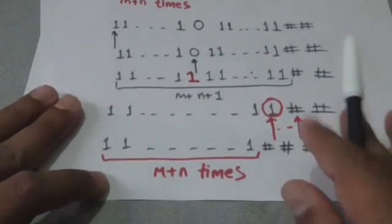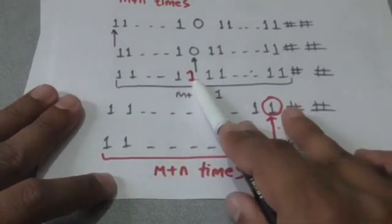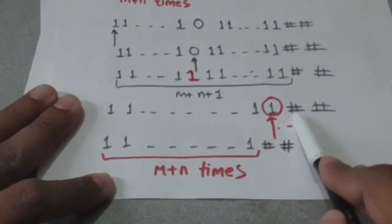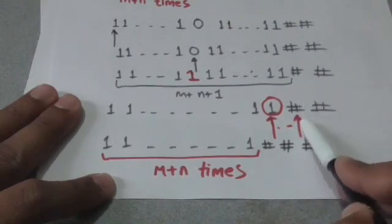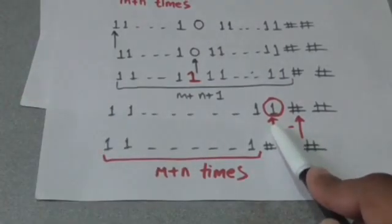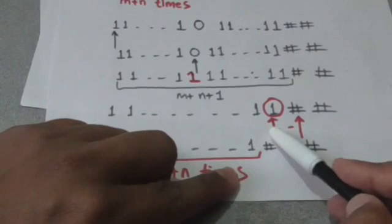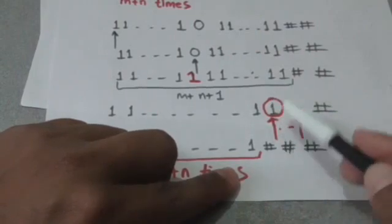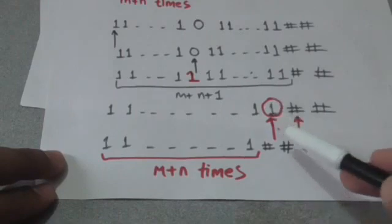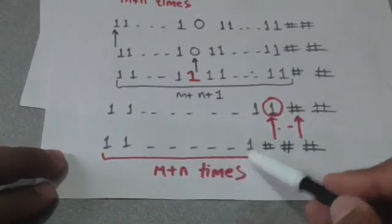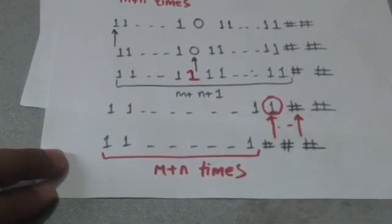Now the Turing machine has to erase the last one on the tape to get the desired output. For this, the Turing machine will find the first blank symbol to the right of the current head position. When it finds it, it will move its head one position to the left. Now the last one is under the read-write head, and the Turing machine will erase it and halt. Now there will be m plus n ones on the tape, which is the output of this computation.